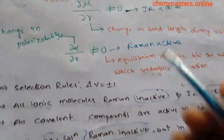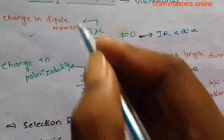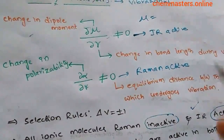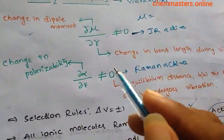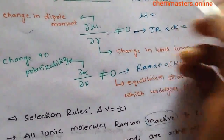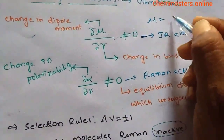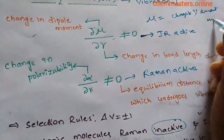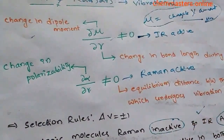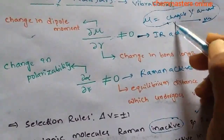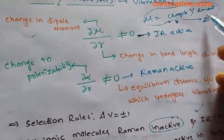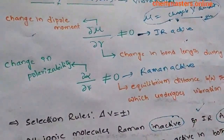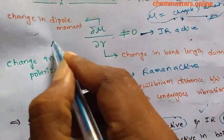We need to understand what dipole moment is. Dipole moment μ equals the product of charge separation and the amount of charge. Simply put, dipole moment is the product of charge separation between the atoms of the molecule and the amount of charge on them.